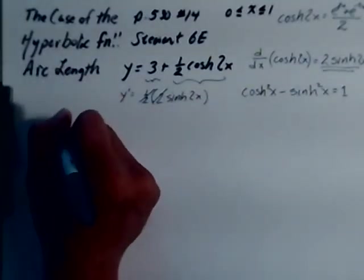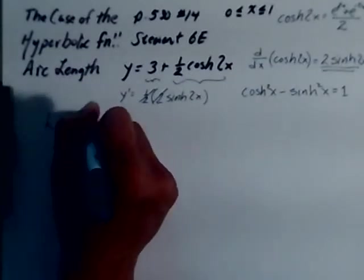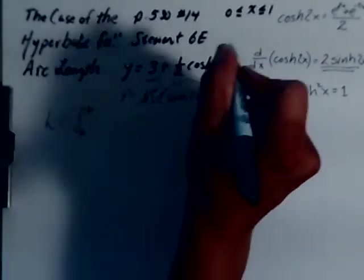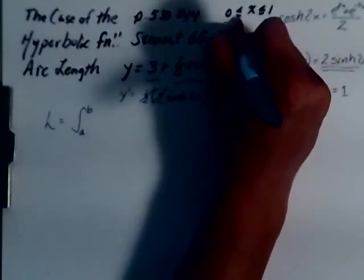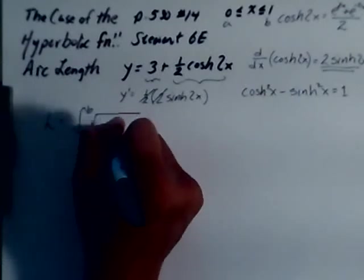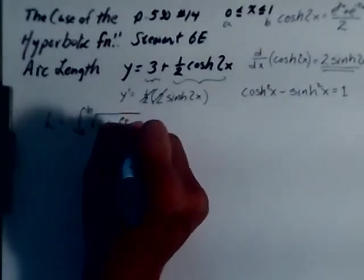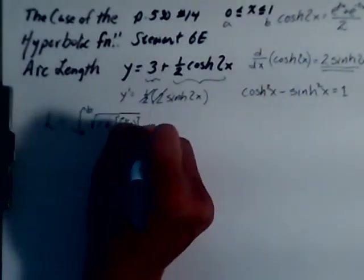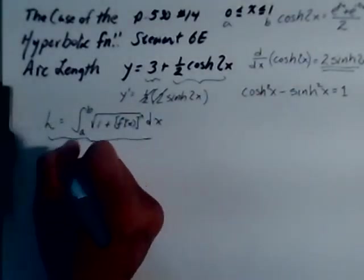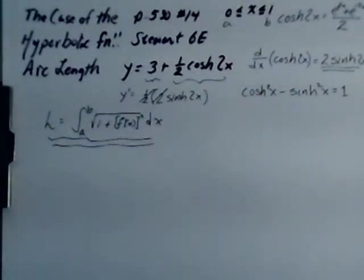And the arc length formula, L is equal to integral from a to b, which is going to be 0 to 1 in our case. From 0 to 1, that's our a, that's our b right there. Of square root of 1 plus f prime of x, and that quantity squared dx. Okay? That's the arc length formula. Make sure you know how to use the arc length formula.